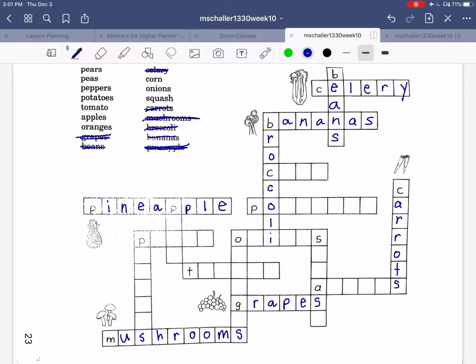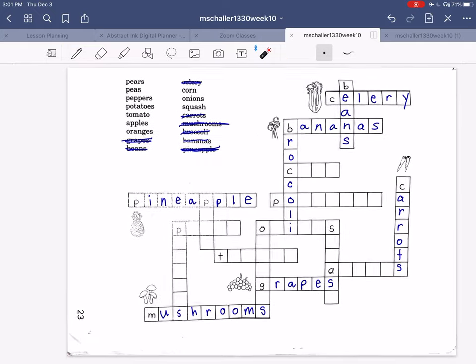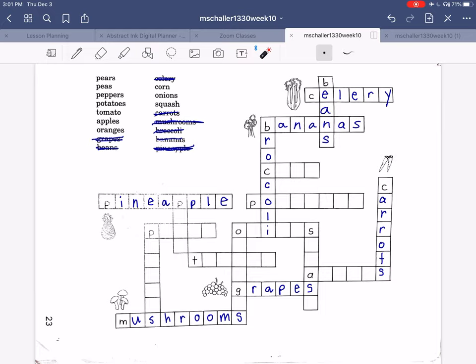What other ones can we figure out? Here we have C. Do we have any? What words do we have left with C? Ah, only one. Corn. One, two, three, four letters. One, two, three, four letters. Corn. You can cross off corn.